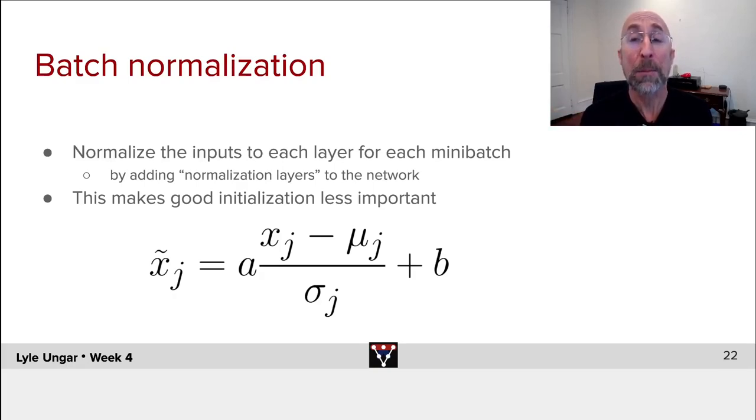and divide it by its mean over the mini-batch, because we're running mini-batches, and divide it by its standard deviation over the mini-batch. That would make it mean zero variance one.